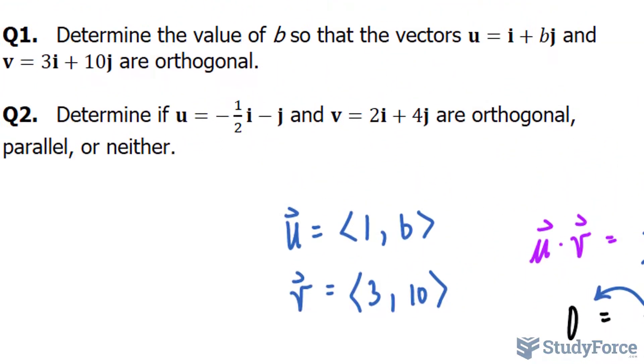Therefore, only when the vector is 1I minus 3 over 10J will the dot product be zero, and therefore these two vectors orthogonal.